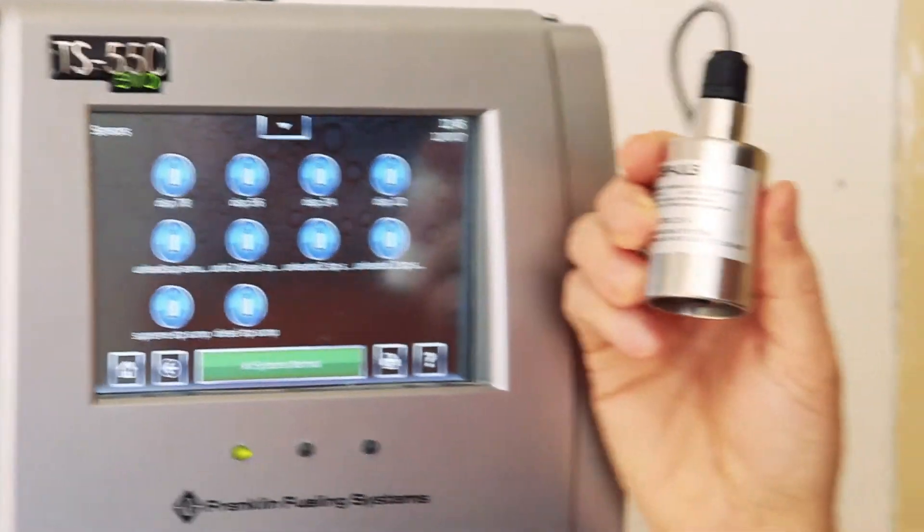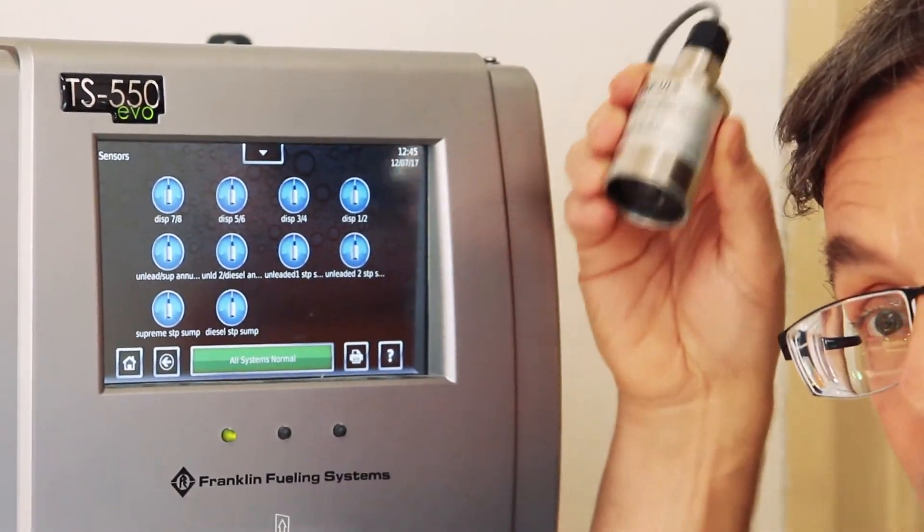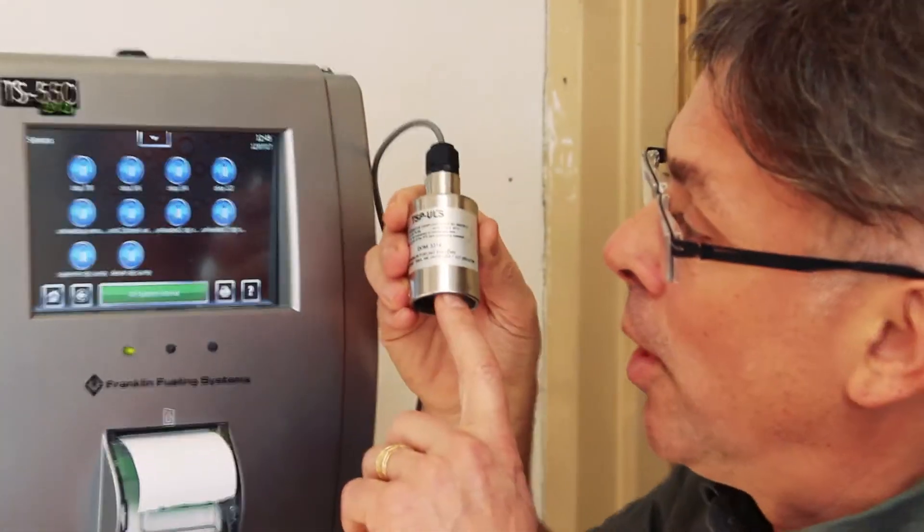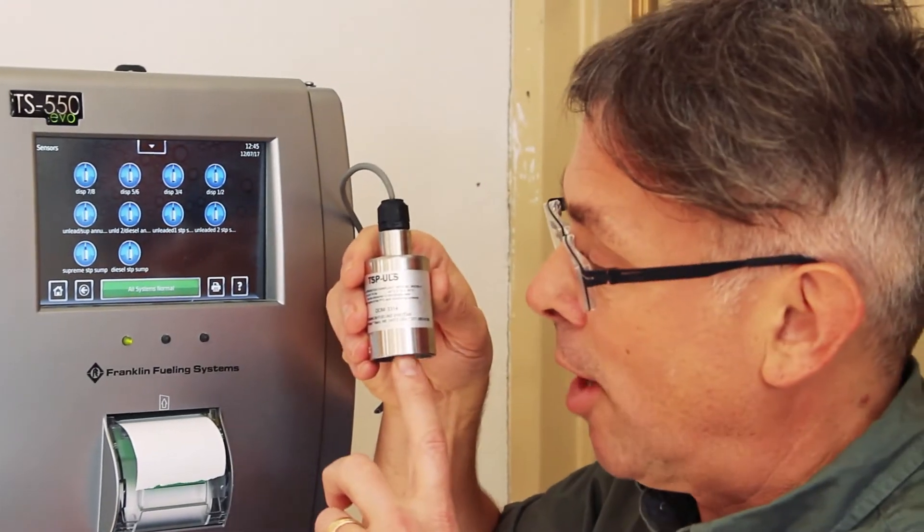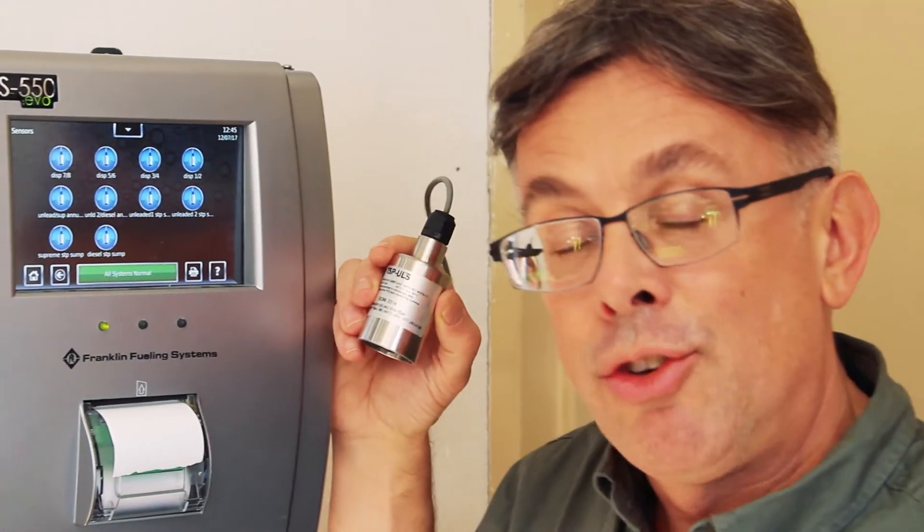An interstitial sensor looks something like this. There's a little float inside here - you can hear the float - and if liquid gets into the containment sump, it will raise the float and trigger the alarm.